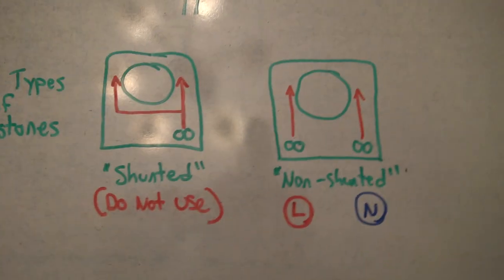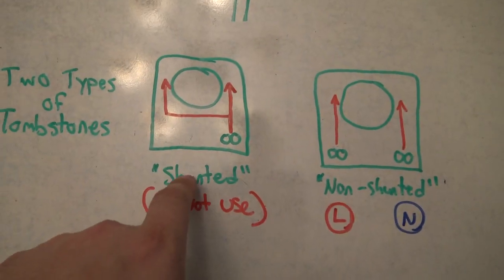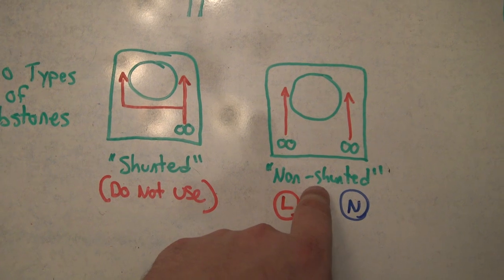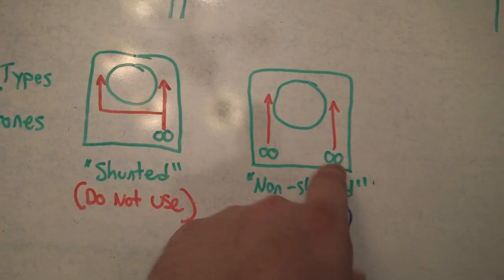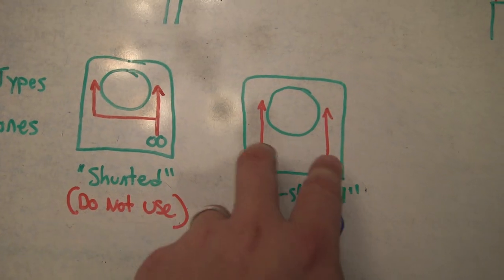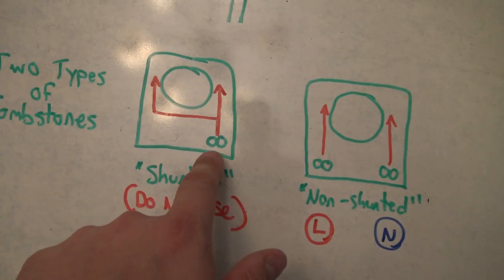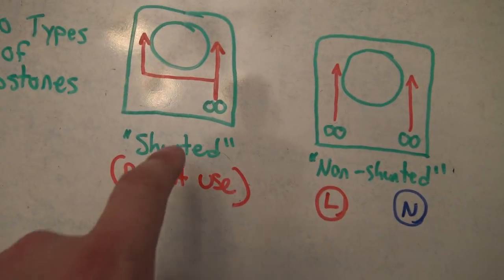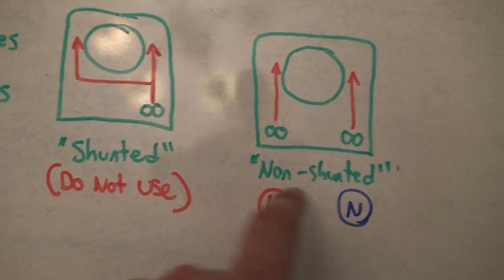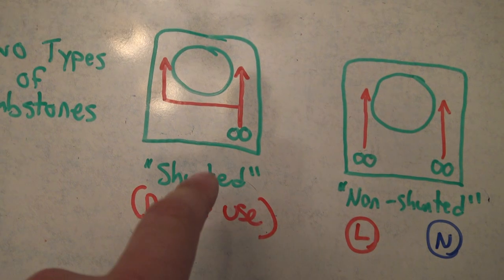And there's two different types. There's a shunted tombstone, and there's a non-shunted tombstone. And usually, you'll see the wires coming into the sides. Either it comes into both sides, or maybe it just comes into one side. And so these are the two different types. There's shunted, and there's non-shunted. And essentially, with LED lights, the rule of thumb is to steer away from shunted tombstones.